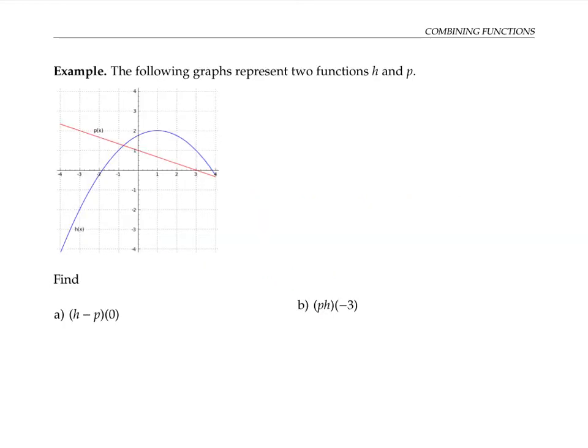In this figure, the blue graph represents h of x, and the red graph represents the function p of x. We're asked to find h minus p of zero. We don't have any equations to work with, but that's okay. We know that for any x, h minus p of x is defined as h of x minus p of x.